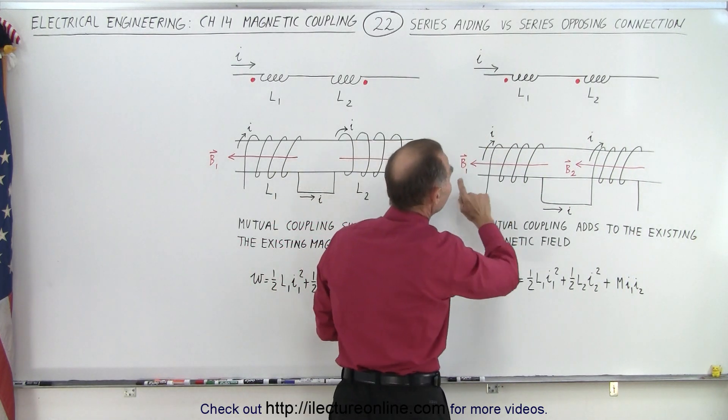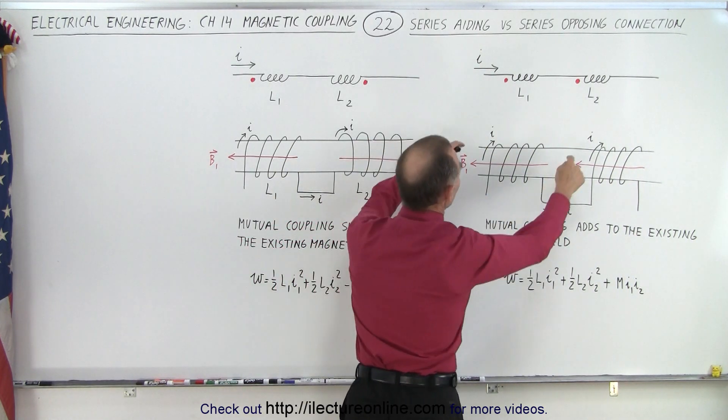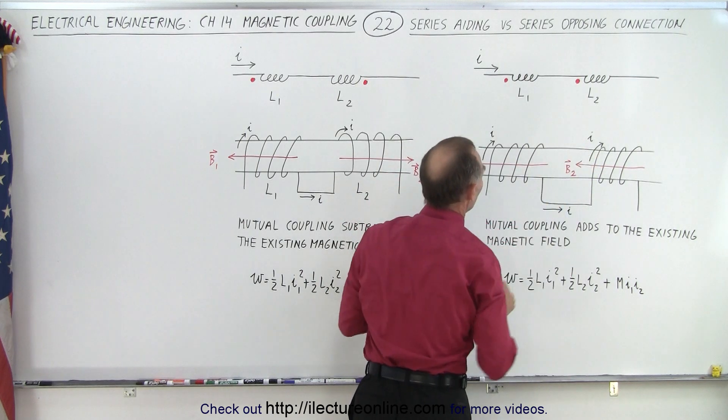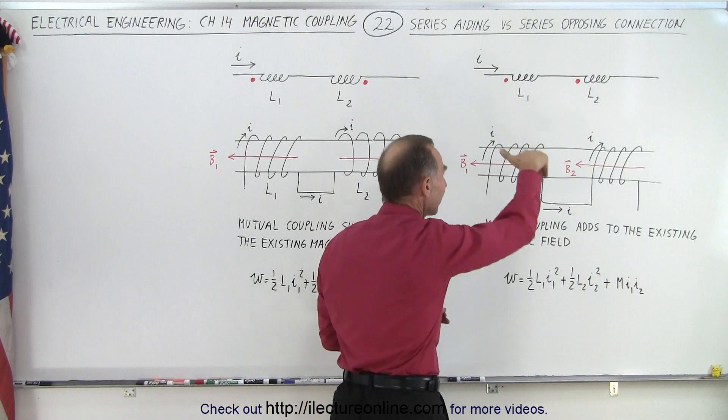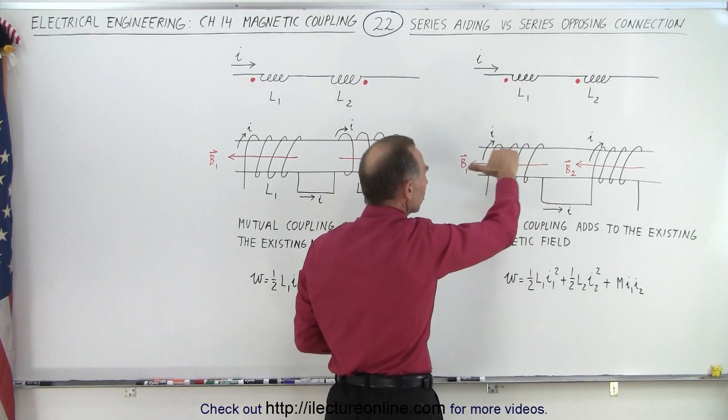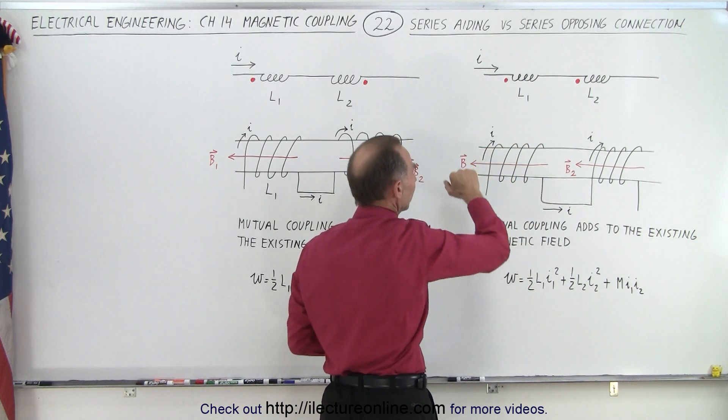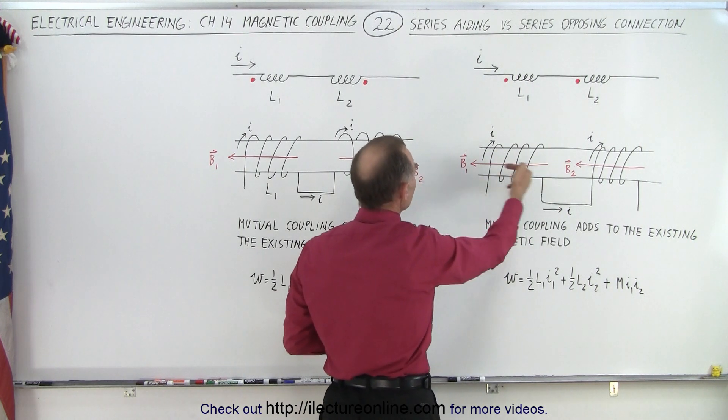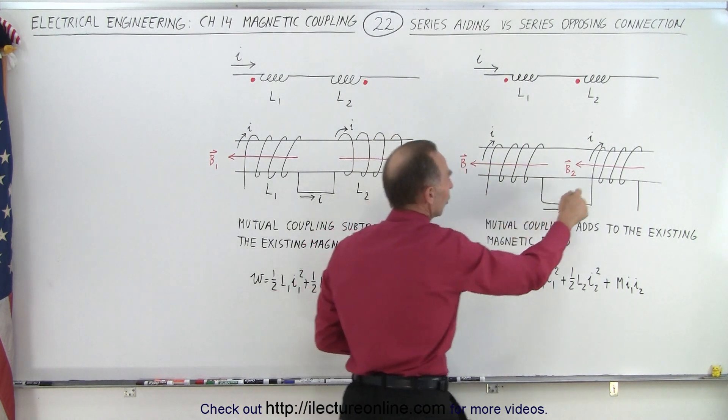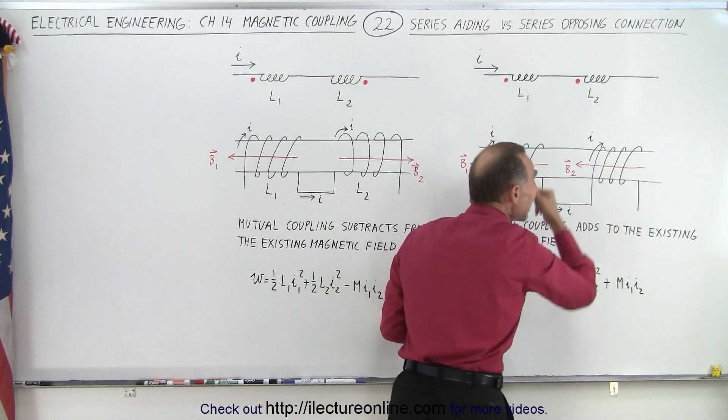Now this is what we call a series aiding connection. That means the dots are on the same side of the coil. Also notice that when you use your right-hand rule and you point your fingers in the direction of the current, your thumb will point in the direction of magnetic field. So for coil one, you have the magnetic field in this direction. For coil two, you have the magnetic field in the same direction.